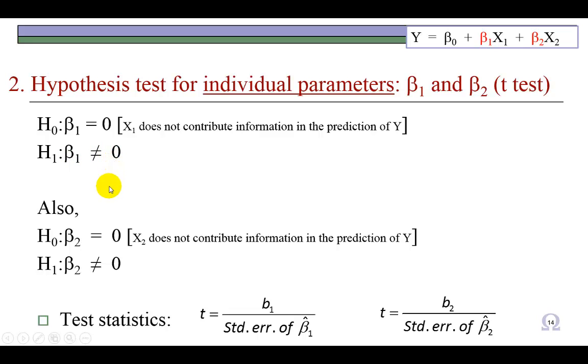Similarly, the null hypothesis as to whether X₂ contributes information in the prediction of Y would be that β₂ is equal to 0, which would mean that X₂ does not contribute information in the prediction of Y. And the alternative is that β₂ is not equal to 0, meaning that X₂ has an impact on Y.